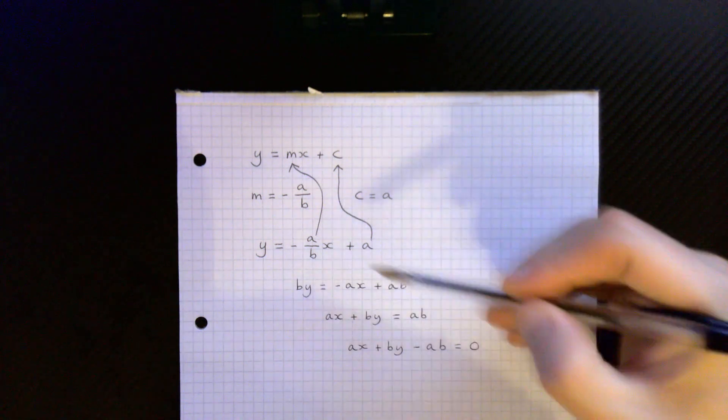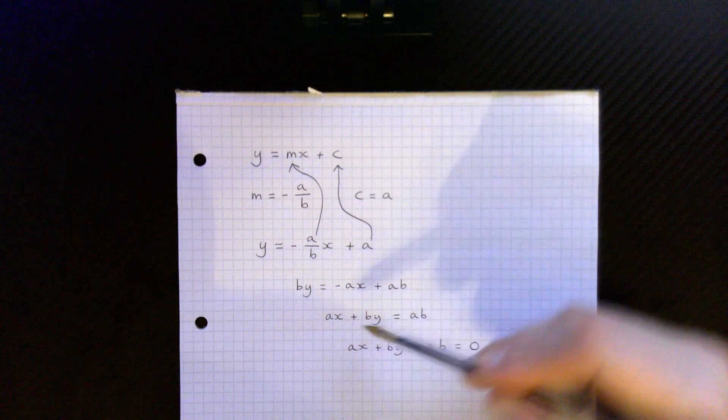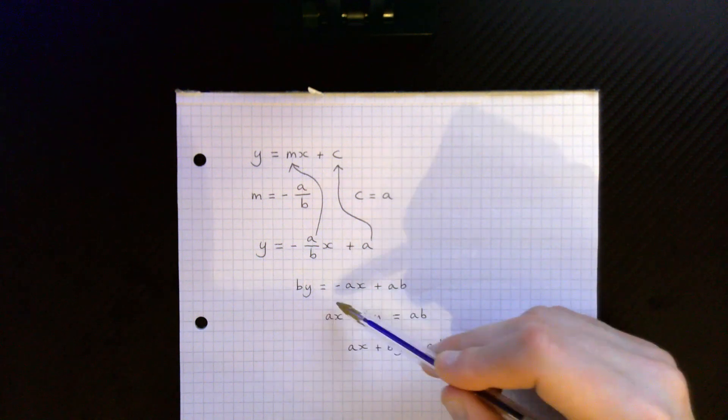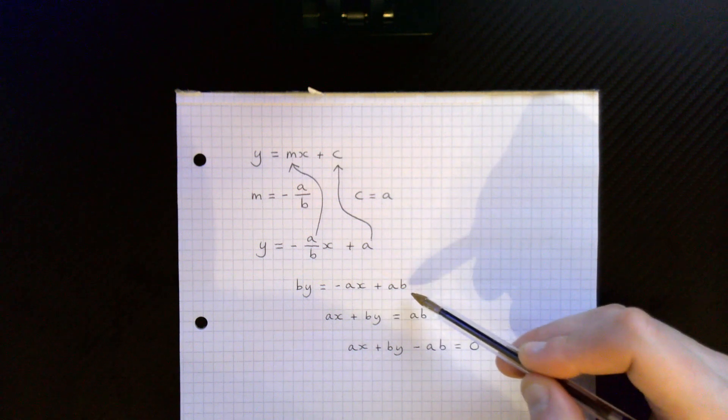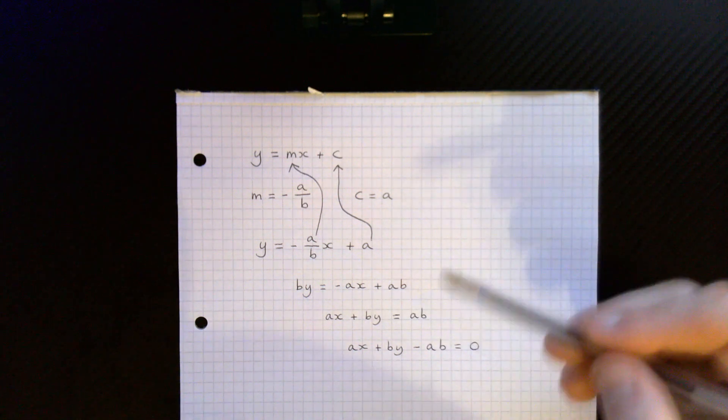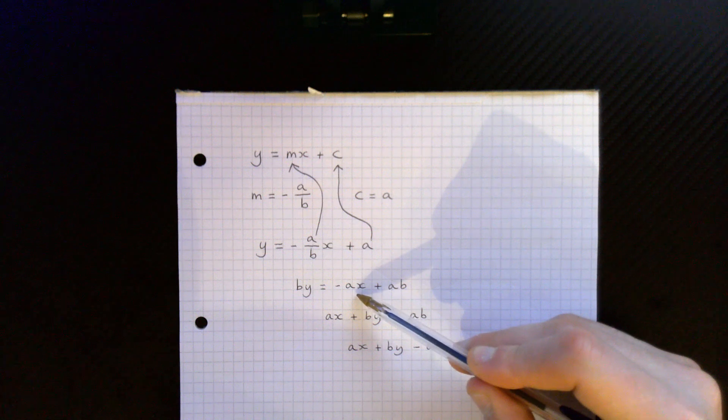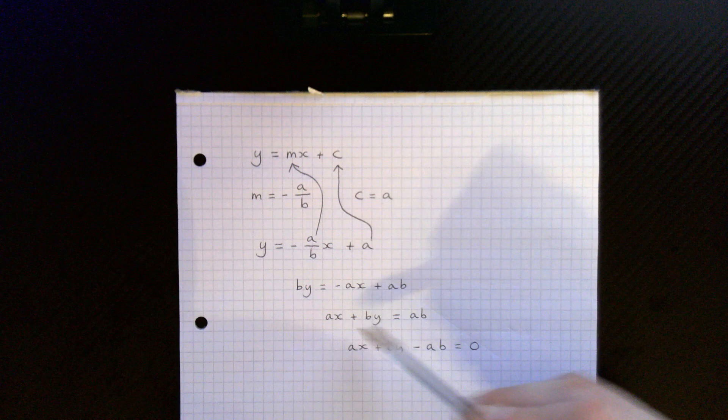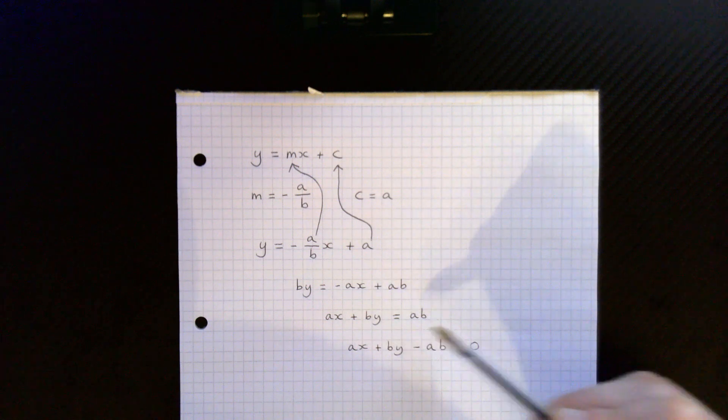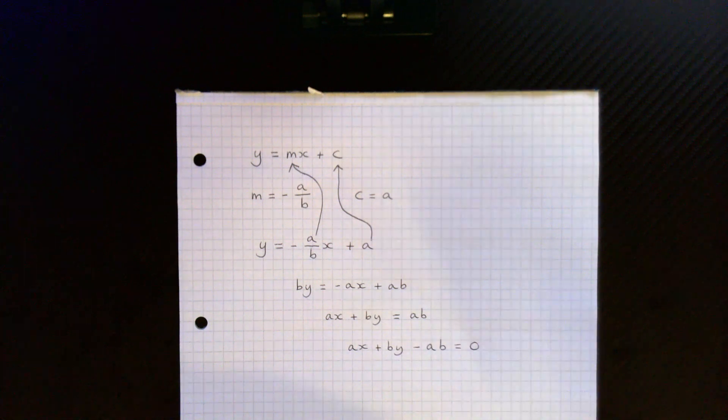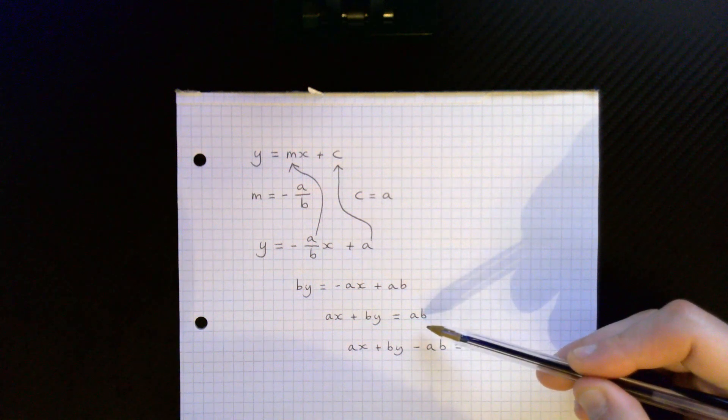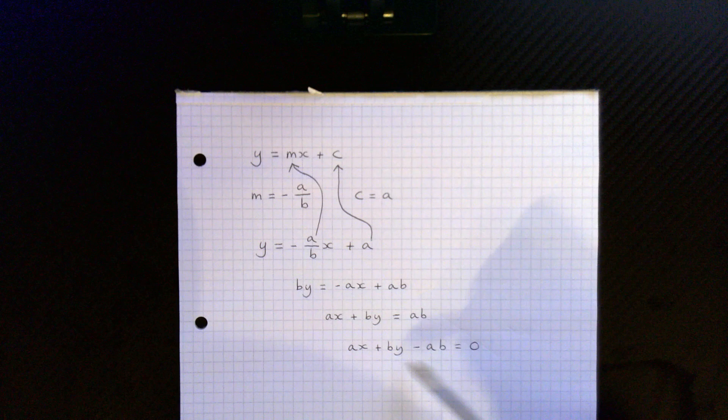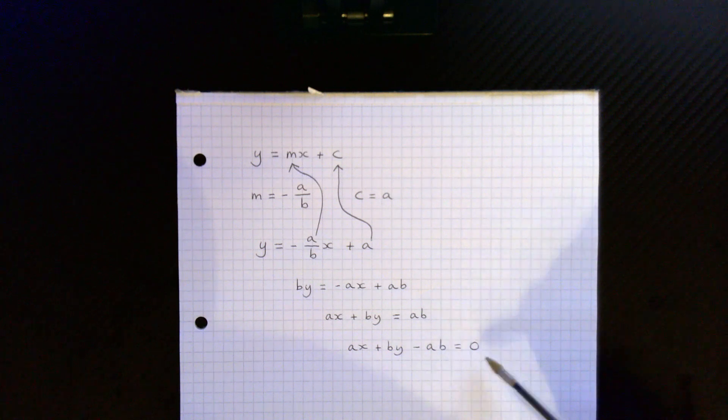Okay now from here we multiply both sides of the equation by b. So we have by is equal to minus ax plus ab. We then add ax to both sides of the equation, giving us ax plus by is equal to ab. We then subtract ab from both sides of the equation and then we end up with ax plus by minus ab is equal to zero.